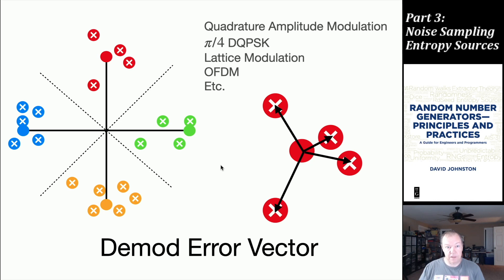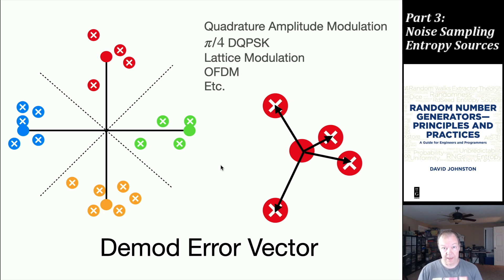That's a few types of random number noise sources based on sampling of noisy signals. The next video will be on amplifying noise in a slightly different way and on racing noisy circuits — two classes of random number noise source that are different enough in style to be treated separately. Thank you and see you next time.